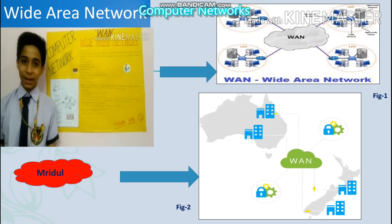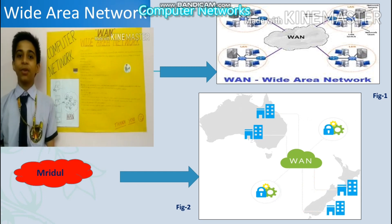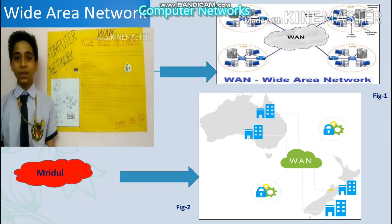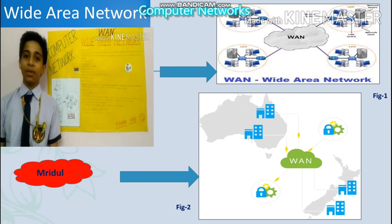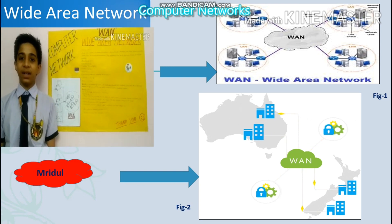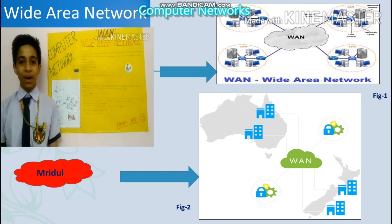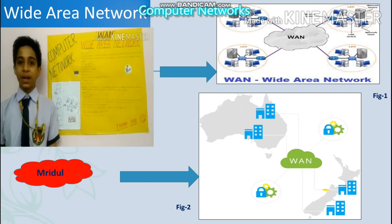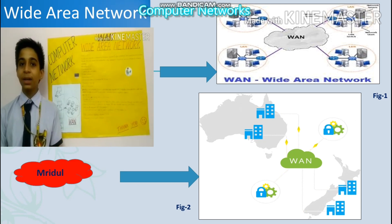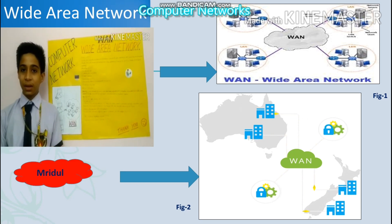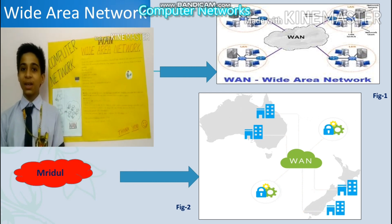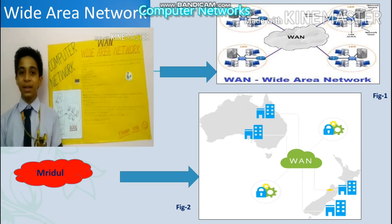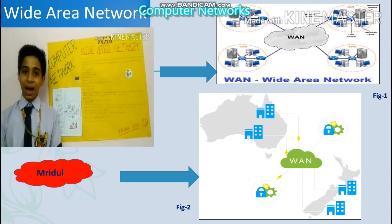Advantages of WAN: it has centralized data, it keeps updated files and folders, and it helps us to do global business. Disadvantages of WAN: it faces security problems compared to LAN and MAN, and the setup cost is also very high. Some common WAN technologies: the two most common WAN technologies are Public Switched Telephone Network (PSTN) and Integrated Services Digital Network (ISDN). Thank you.